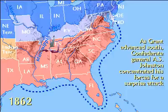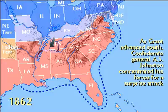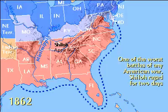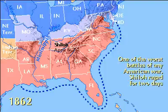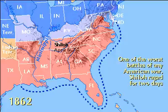As Grant advanced South, Confederate General A.S. Johnston concentrated his forces for a surprise attack at Shiloh Church. One of the worst battles of any American war, the Battle of Shiloh raged for two days.